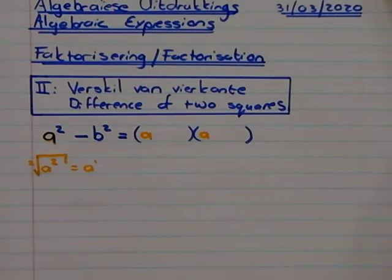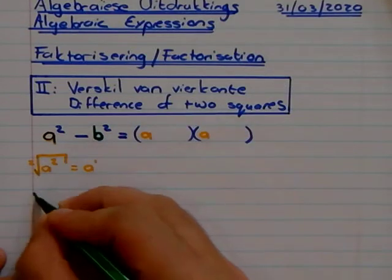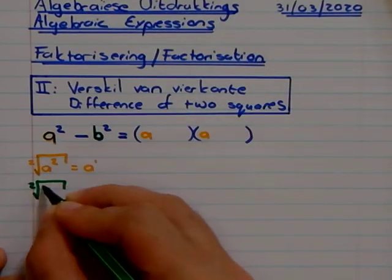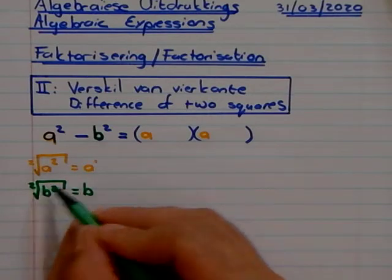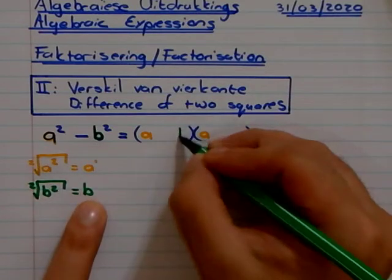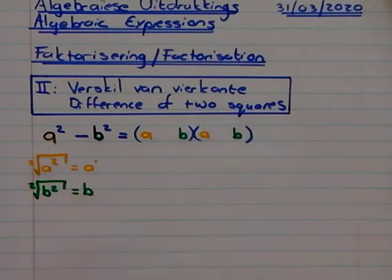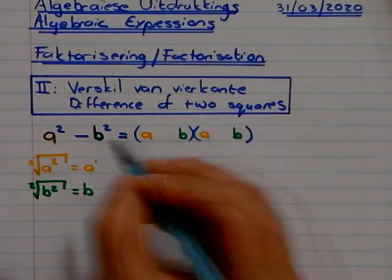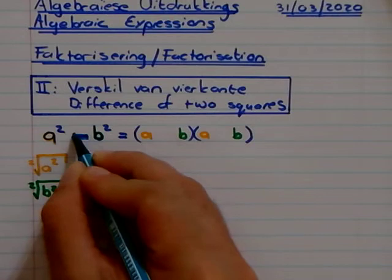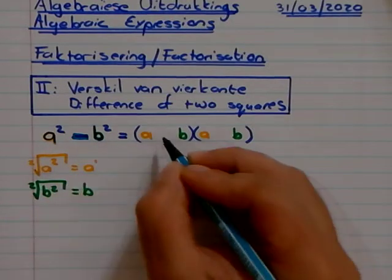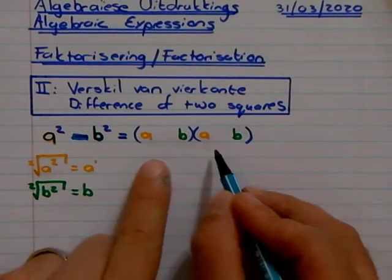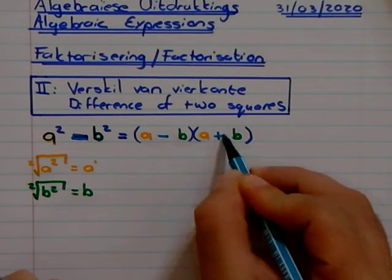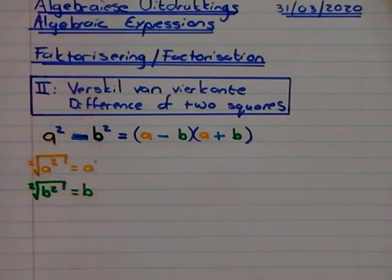If I take my b and I put that underneath the square root, 2 divided by 2, I get b. Now remember, this only works with difference, only with a minus sign. So therefore, they are identical, only difference is they're exactly the same, and the difference is one minus and one plus.